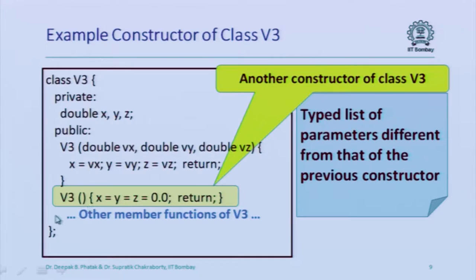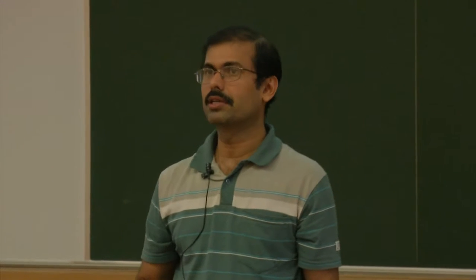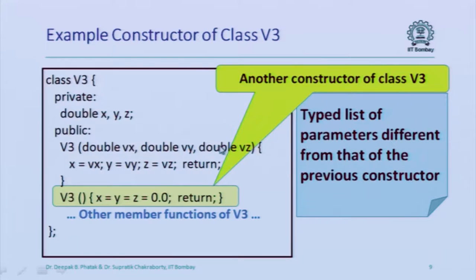The only thing you have to ensure is that the list of parameters must have different types for each of the different constructor member functions. Here the three parameters are double, double, double — I cannot declare another constructor whose three parameters are also double, double, double. I can declare one that takes no parameters, or just one double, or four doubles, or two doubles. But I cannot declare another that takes three double parameters. You can define as many constructor functions as you want, but they must differ on the types of the parameters — the typed list of parameters.